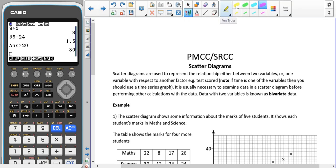So now we're going to start having a look at PMCC and SRCC. Both of these are measures of correlation. But to start off with, we're going to have a quick recap on scatter diagrams.